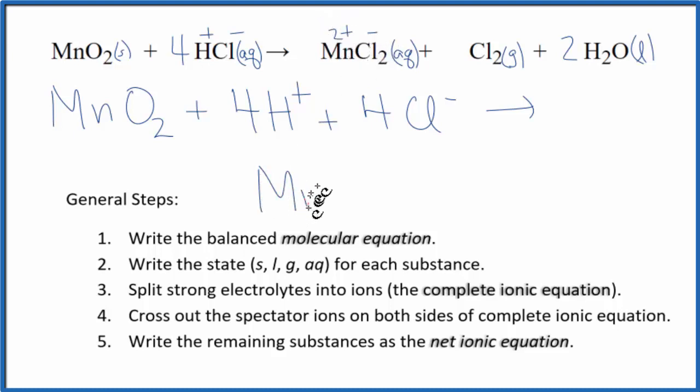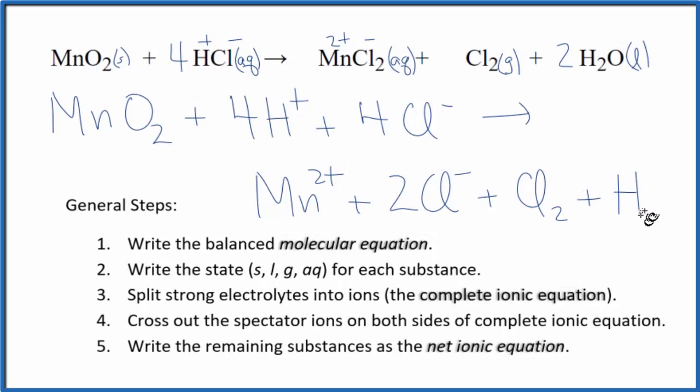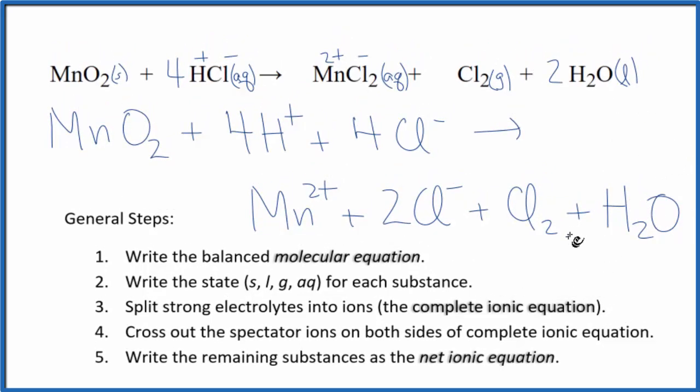So we have our Mn 2 plus ion. We have 2 of those chloride ions. We don't split gases apart, so we have Cl2. And we don't split water apart, so we just have H2O. This is the complete ionic equation.